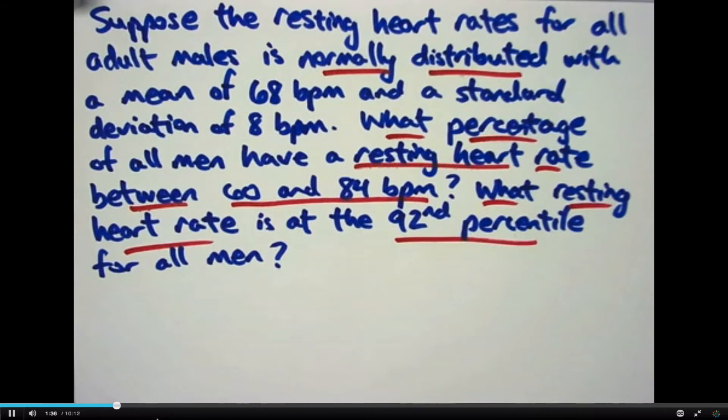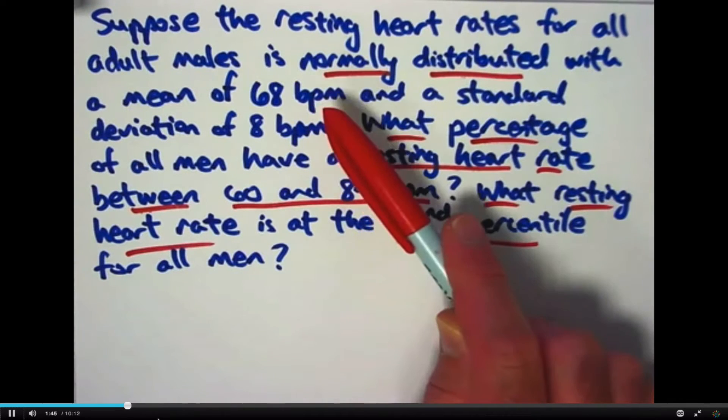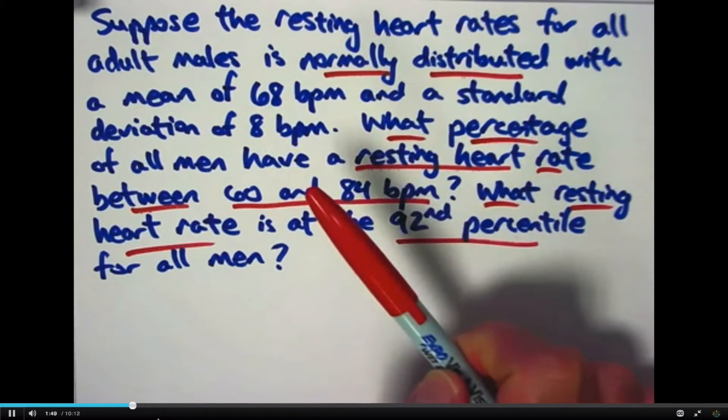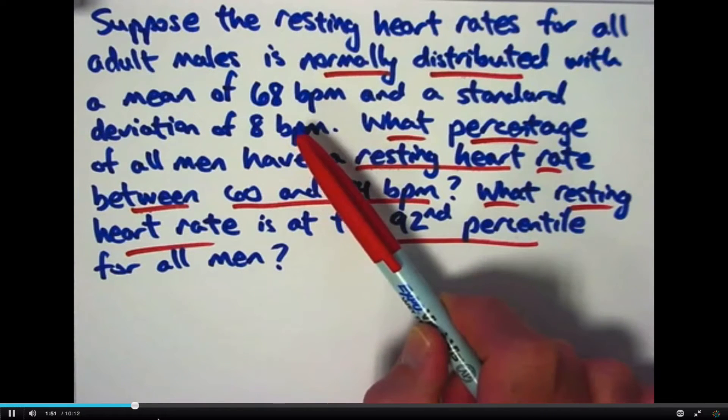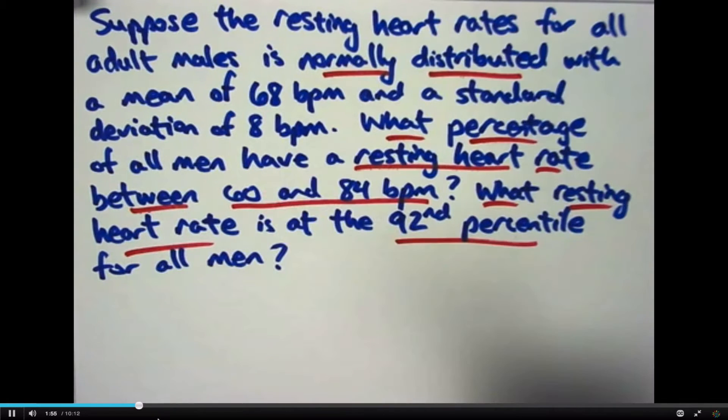Two pretty different sounding questions related to this one situation. By the way, as far as these numbers go, I just made these up. 68 beats per minute sounded pretty accurate, perhaps for the mean of resting heart rate of all adult males. Eight beats per minute? I just made that up. Sounded reasonable.